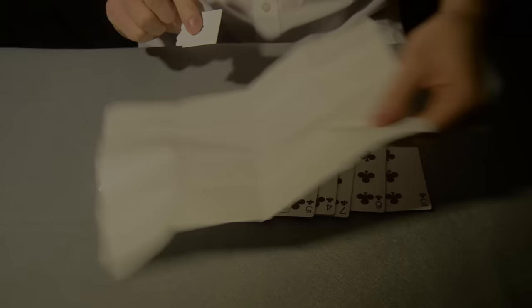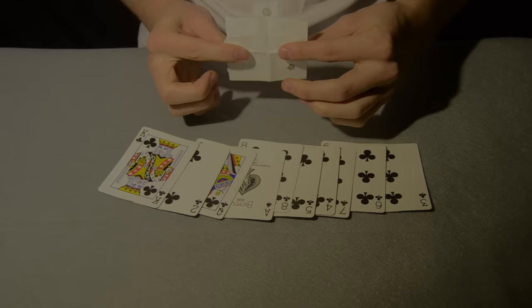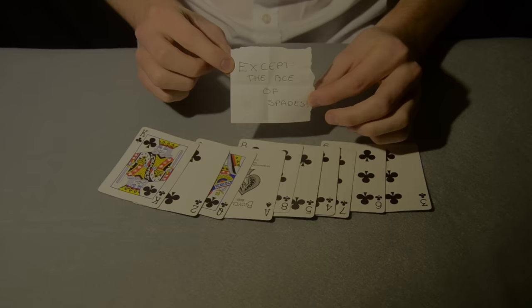But the magician stops, opens up the prediction one more time to reveal another piece of paper. This piece of paper says, except for the ace of spades.